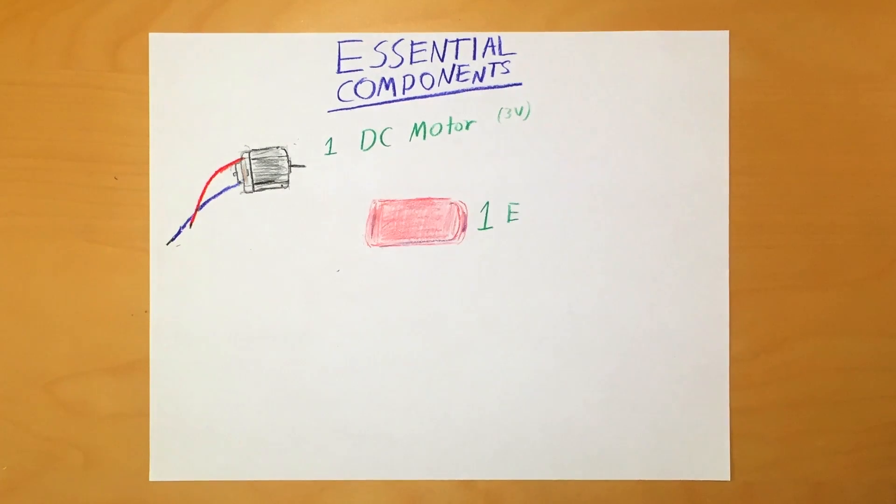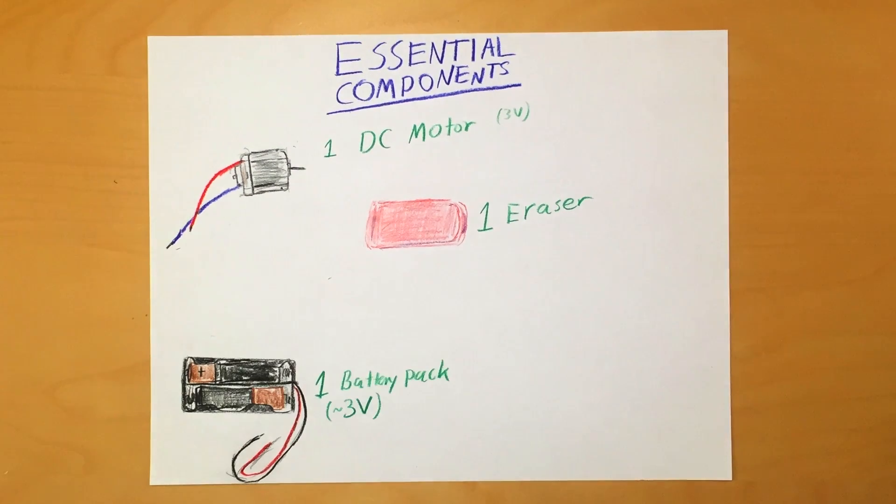Next, you'll need an eraser. Also, get one 3 volt battery pack that holds either 2 AA batteries or 2 AAA batteries.